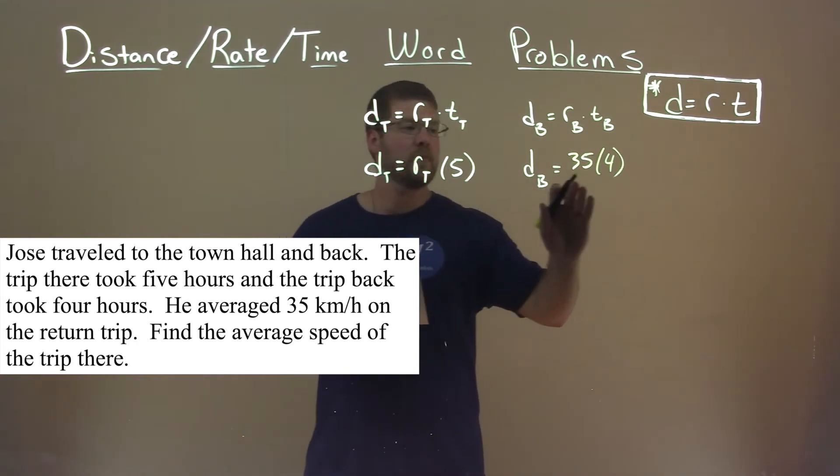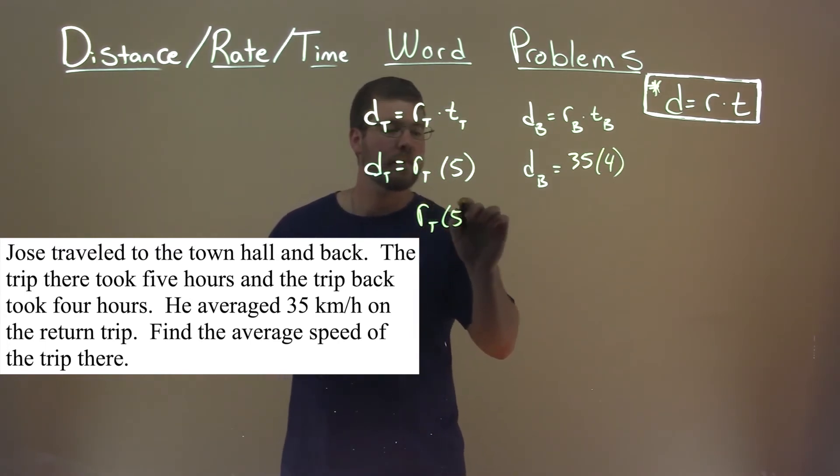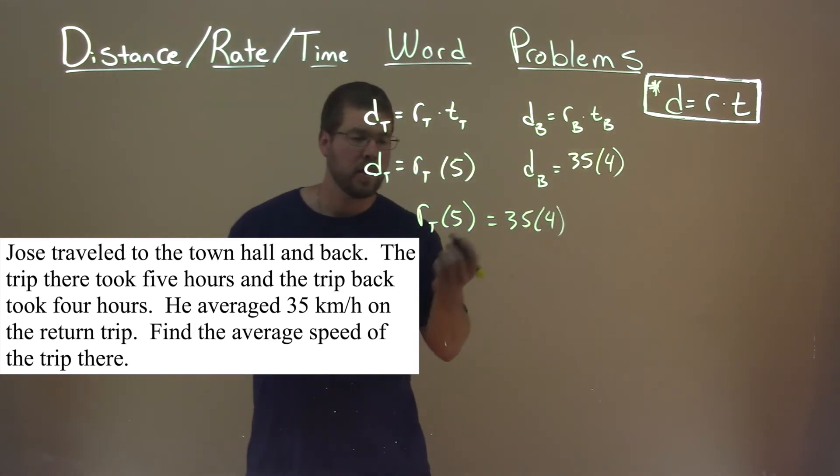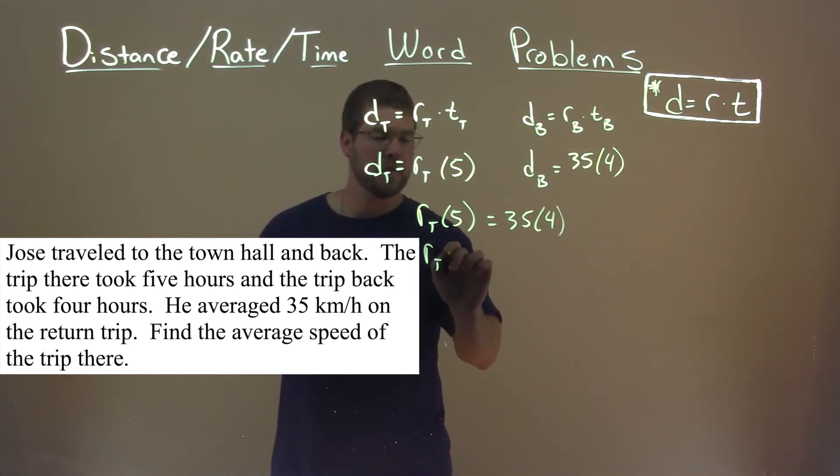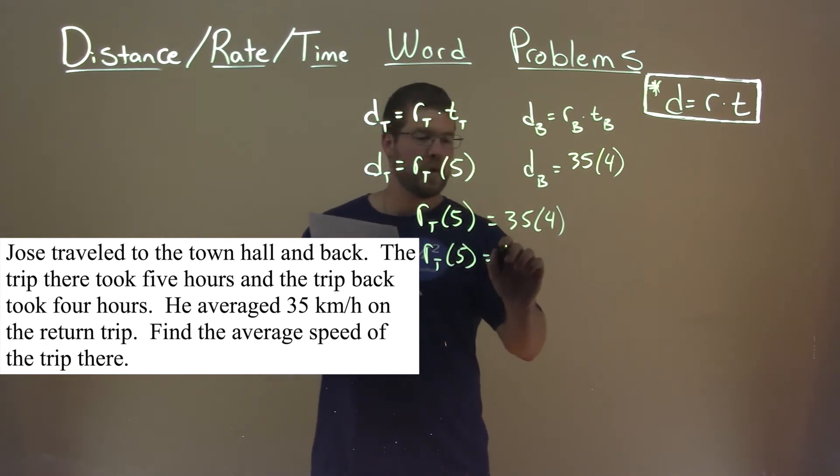So we can set these two equations equal to each other. R sub t times five is equal to 35 times four. Let's simplify this a little. R of t times five. And 35 times four is 140.